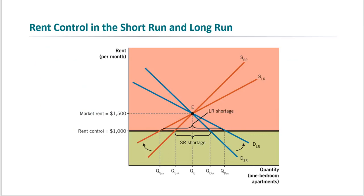Let's look at the effect of rent control in the short run and long run. In the short run, shortage equals quantity demanded in the short run (QDSR) minus quantity supplied in the short run (QSSR). In the long run, both supply and demand become more elastic. Suppliers have more time to adjust and the quantity of apartments supplied falls. Renters try to substitute toward rent-controlled apartments, so the quantity of apartments demanded rises. Therefore, the shortage gets bigger in the long run.